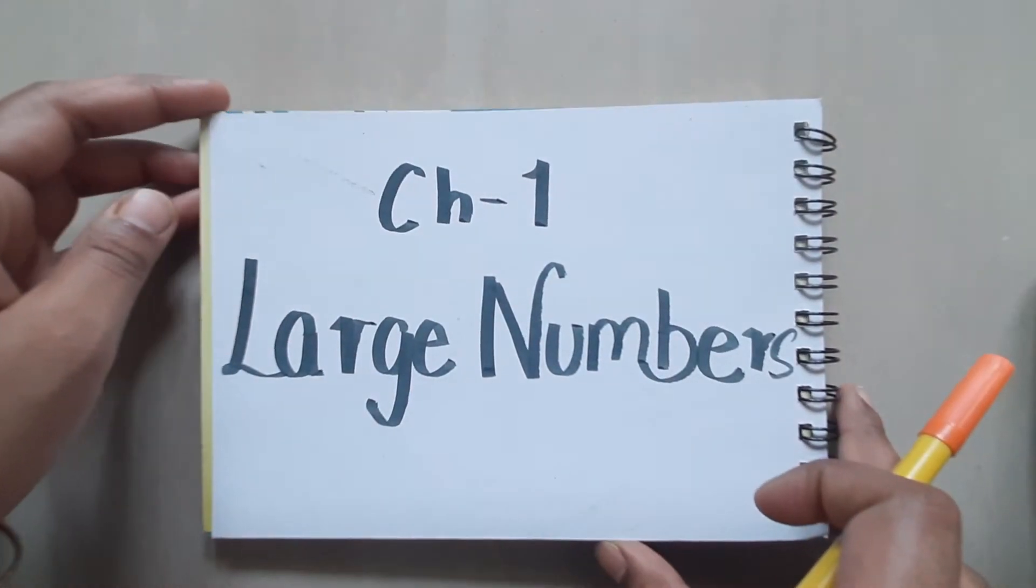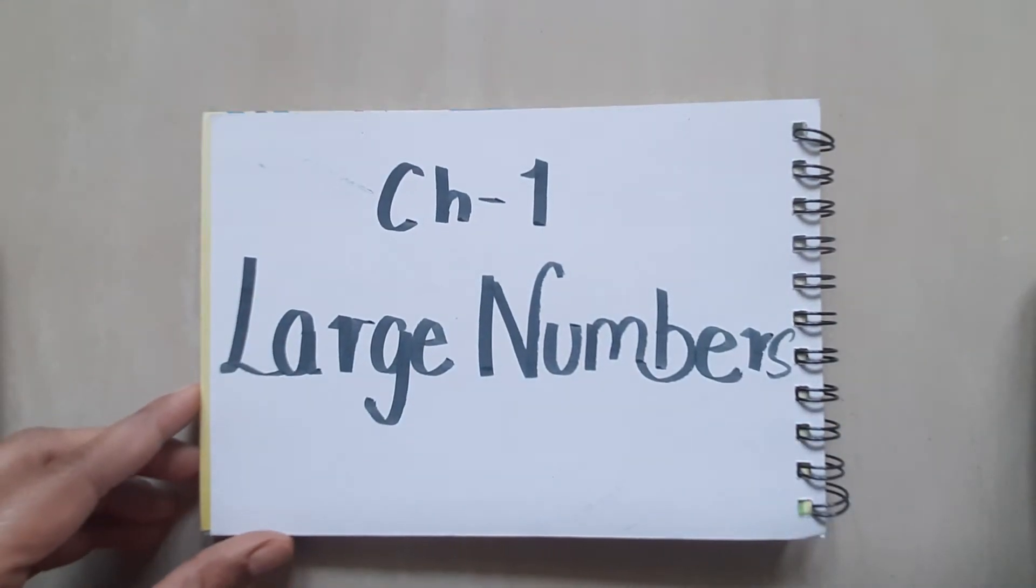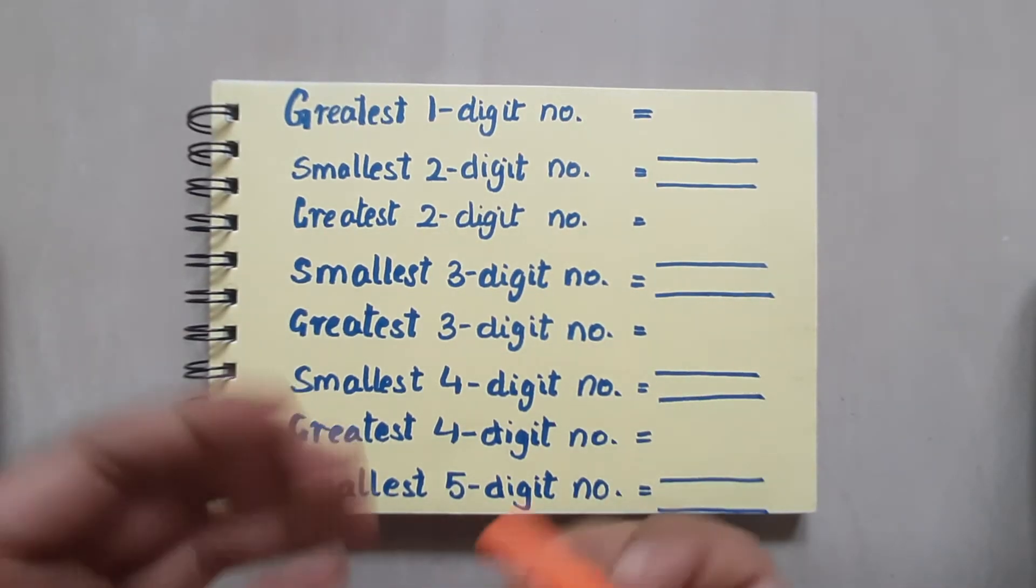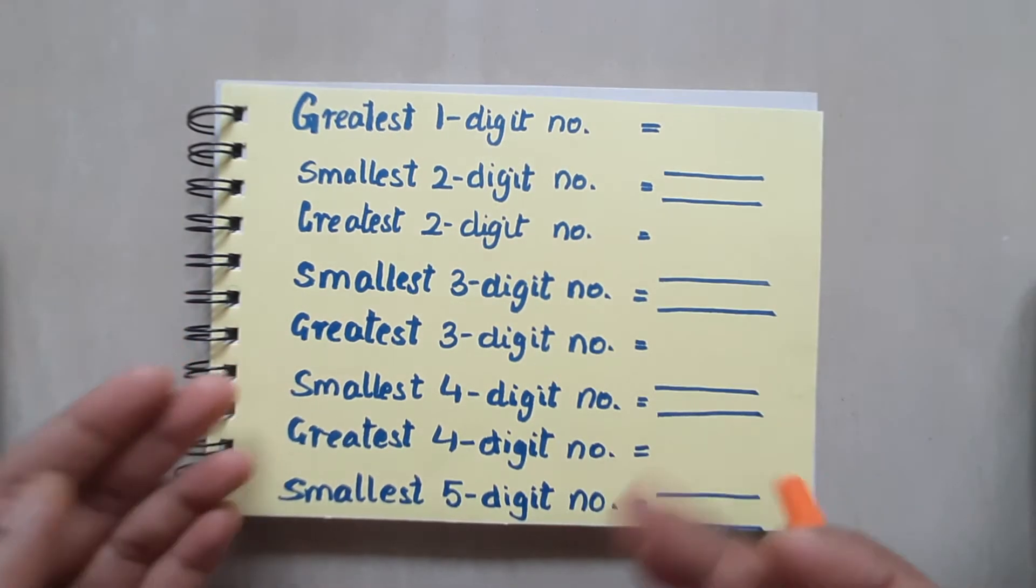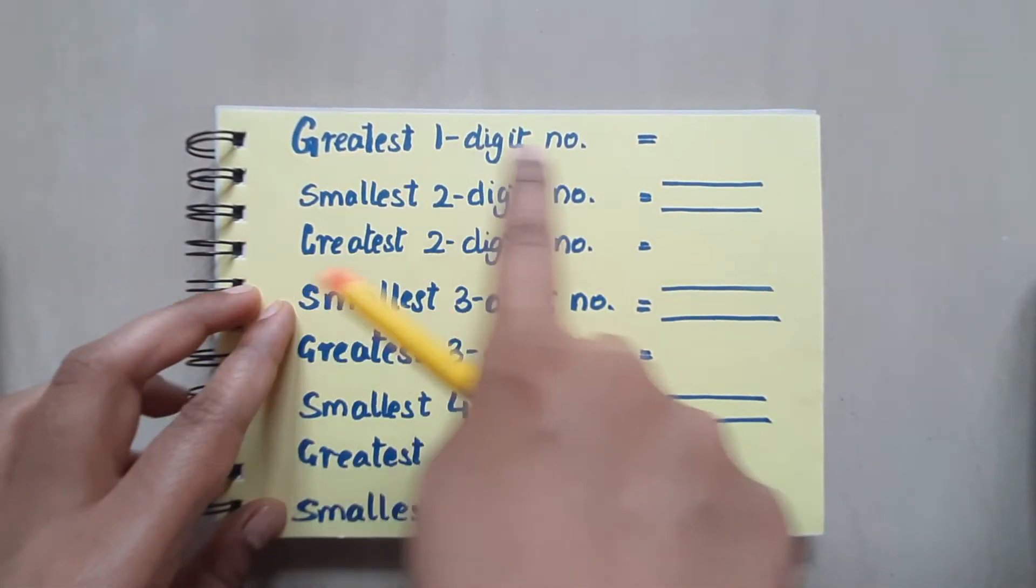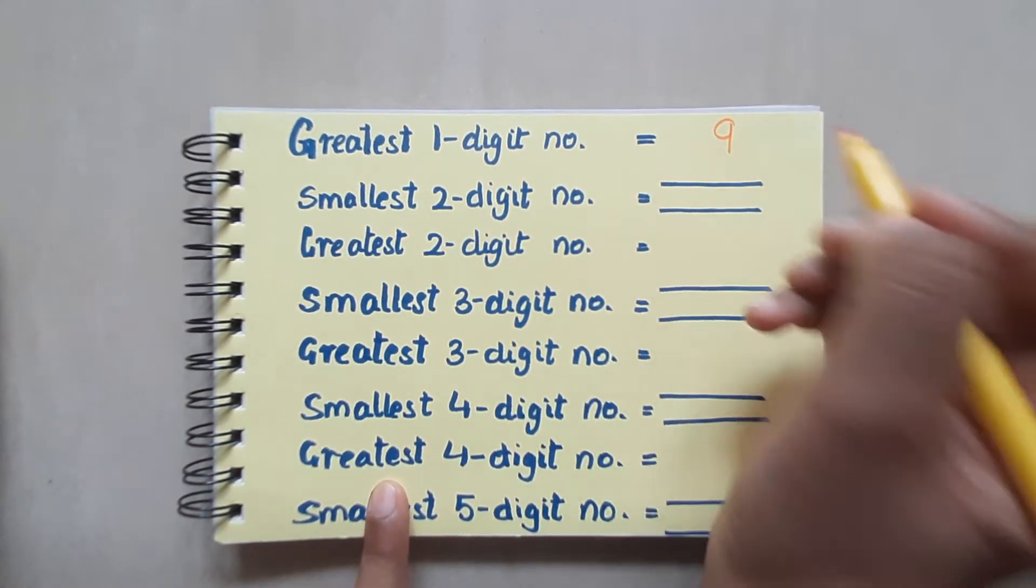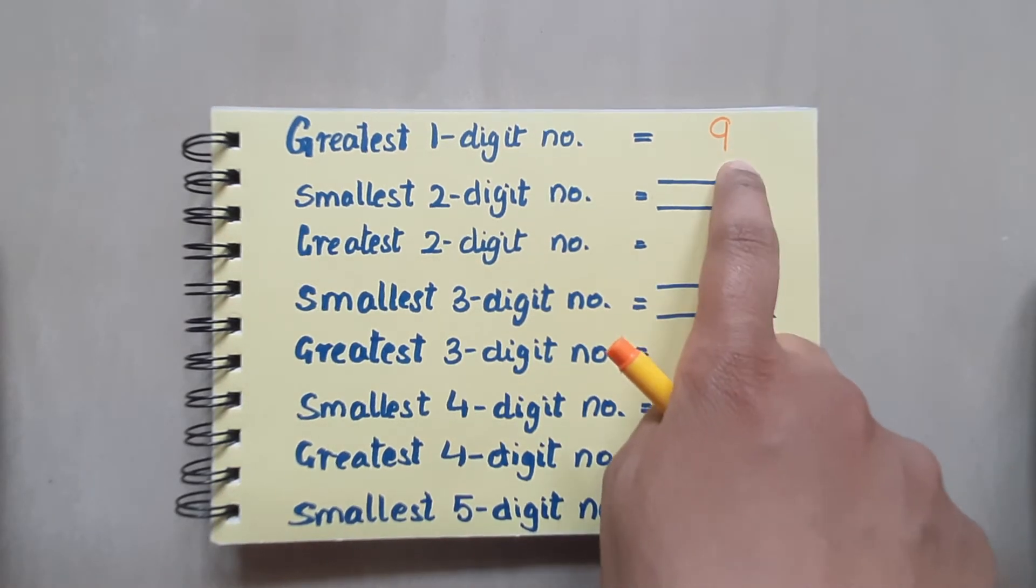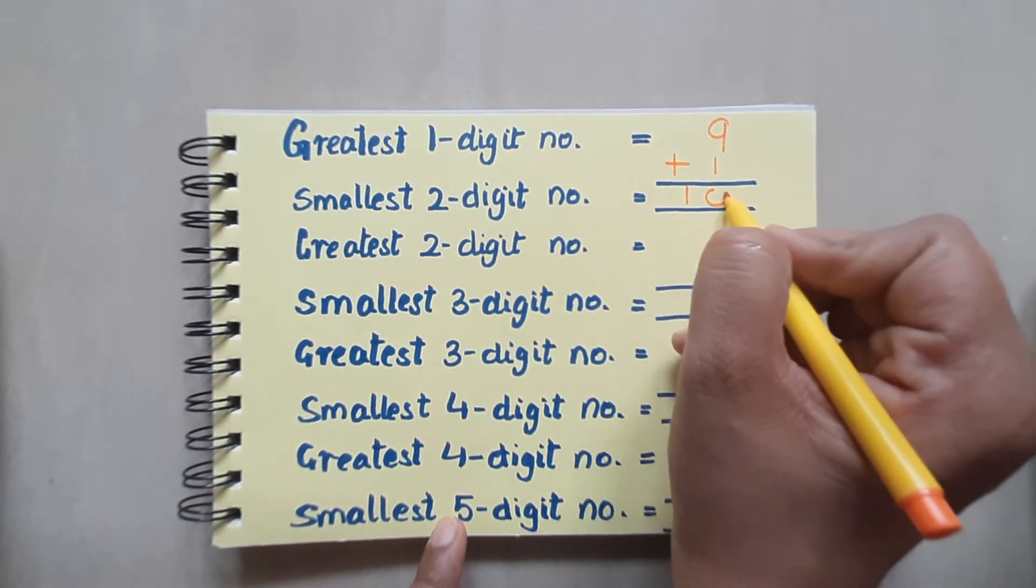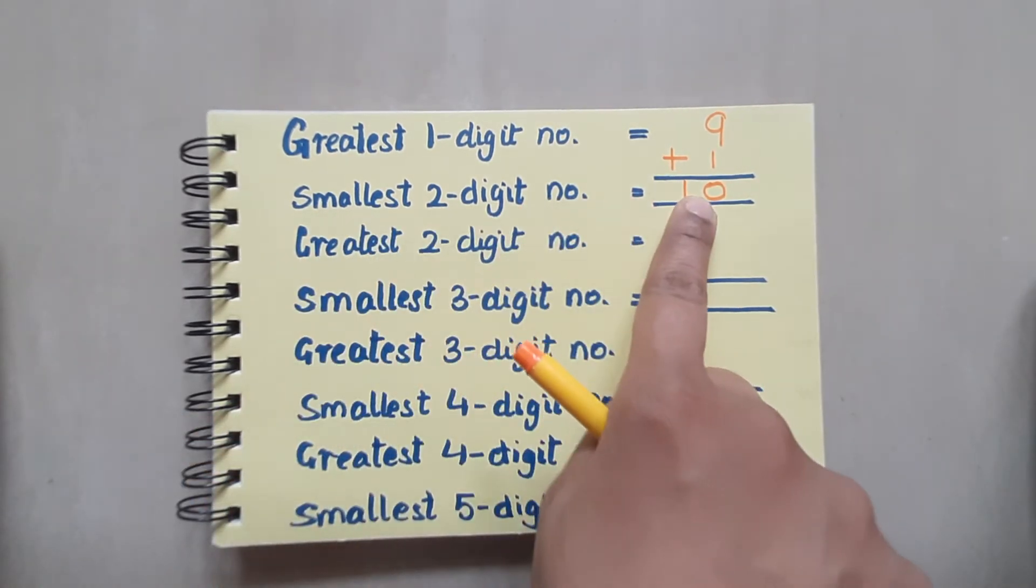Already in class 3 you people have studied 4 digit numbers. Now since you have been promoted to class 4, let's study further about numbers. So this is just a recap of what you already know. This is the sequence of how we move ahead with the numbers. Like here if I talk about greatest 1 digit number, so the greatest 1 digit number is 9. Because 9 is the last digit who has 1 digit. So if I add 1 to it, it becomes 10.